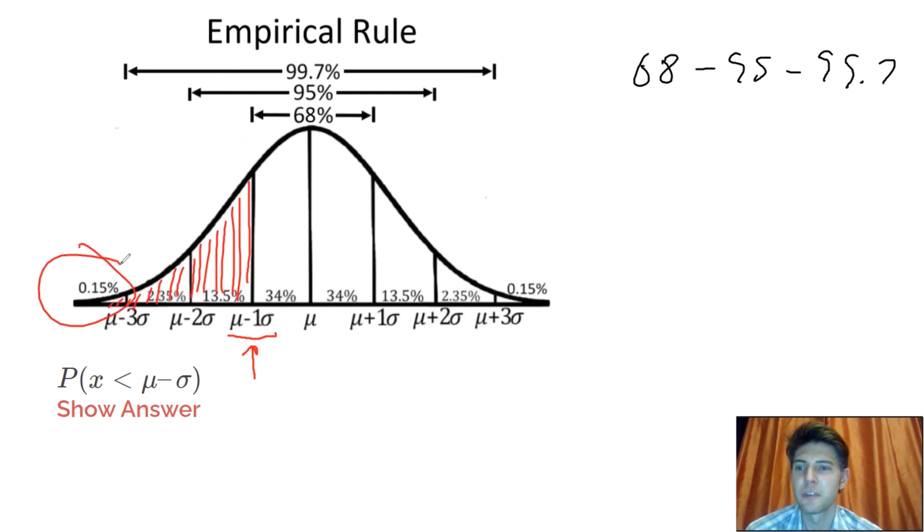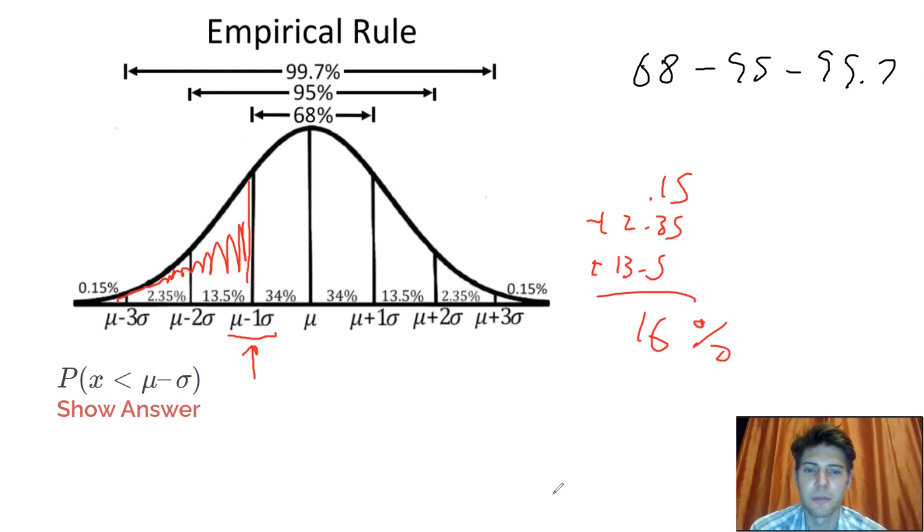We're just going to add up these three numbers. So if we do 0.15 plus 2.35 plus the 13.5, we can just use a calculator to add up those three numbers. And that gives us 16 if we add up these numbers. So the answer should be 16%.